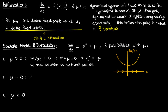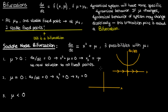But what if μ is zero? In that case you only have one fixed point at x equals zero. If you draw the phase portrait you find that this fixed point is half-stable: if you start from a negative x the system converges to zero, but if you start at a positive x the system diverges from zero.